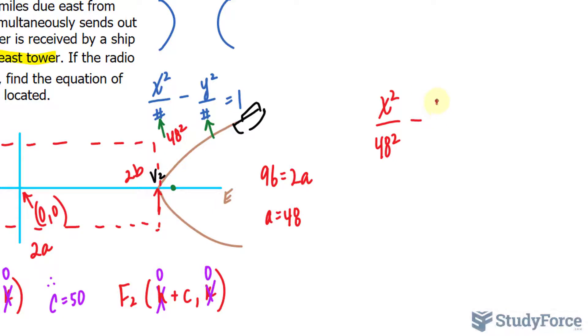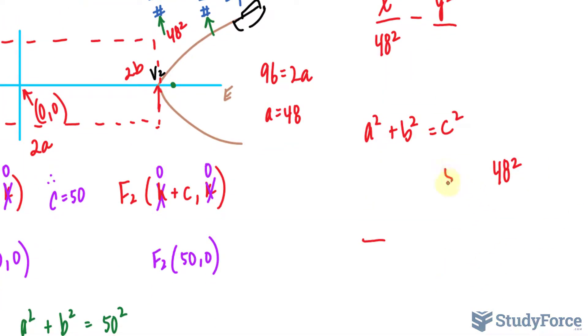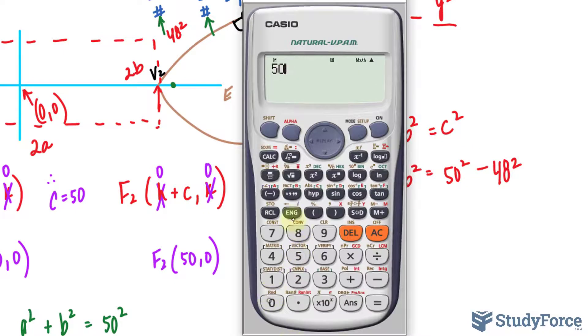Minus y squared over, to find B, we'll use the Pythagorean theorem as discussed earlier, 48 raised to the power of 2. We bring that over, and C we discovered was 50. So 50 raised to the power of 2. Using our calculator, 50 raised to the power of 2 minus 48 raised to the power of 2. We square root both sides to get B, and that's 14.